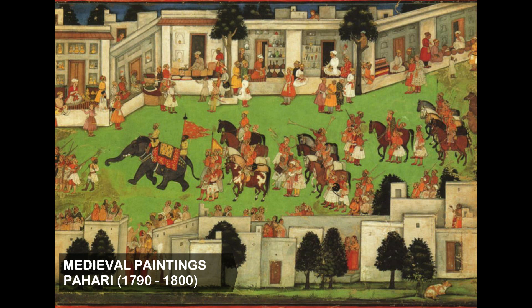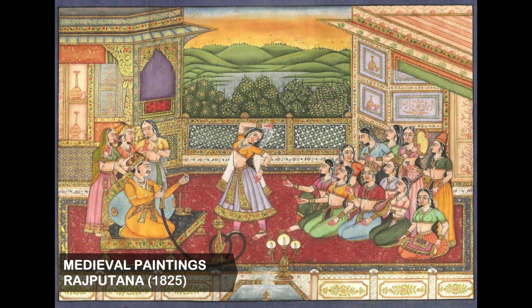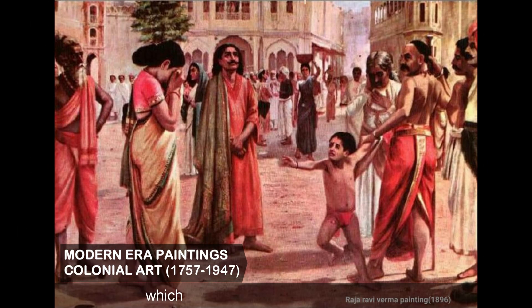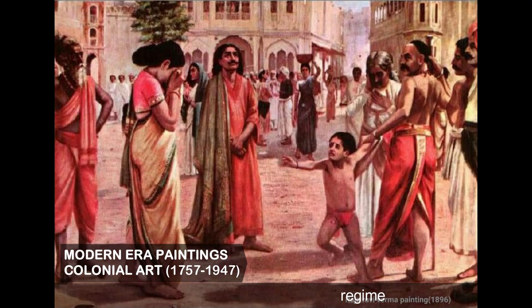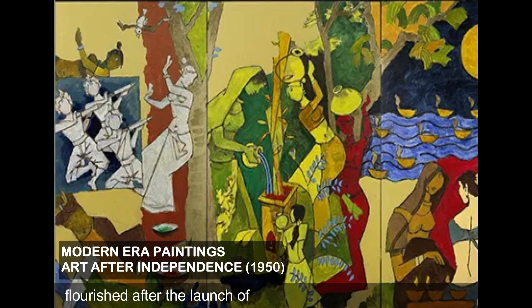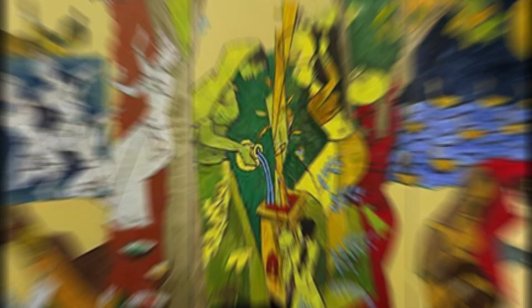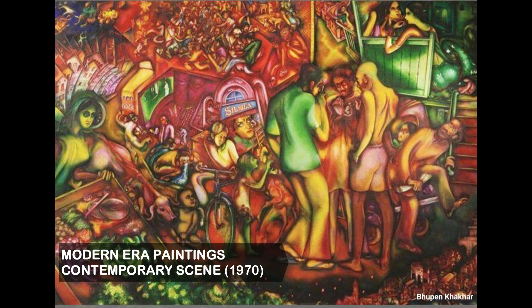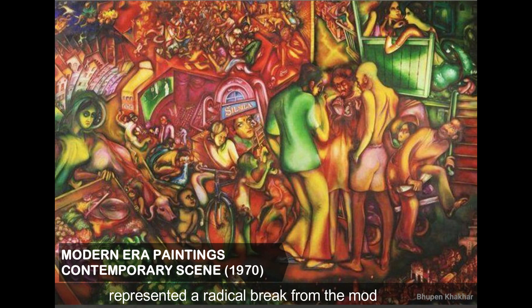Pahari paintings from the Himalayan hill kingdoms, Rajputana paintings from Jaipur and Rajasthan province, colonial art which came during the British regime, modern art in Calcutta inspired from Cubism and Expressionism, art after independence which flourished after the launch of the Bombay Progressive Artists' Group, and contemporary art which represented a radical break from modern art.